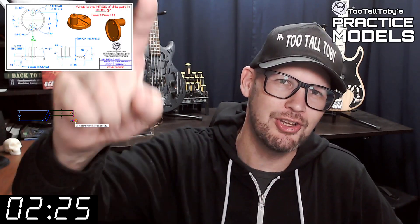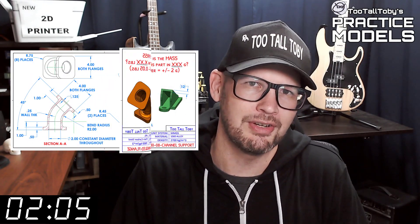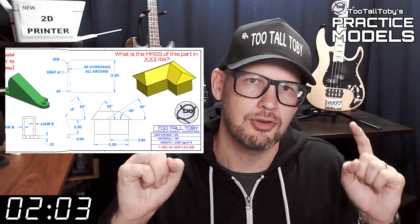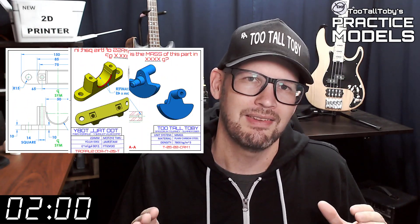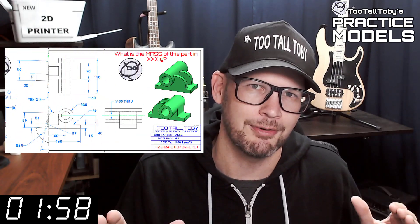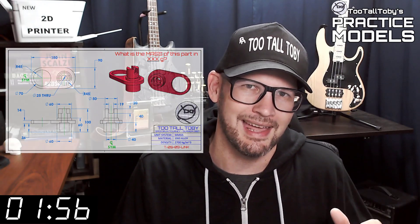Hey, what's up everybody and welcome to Two Tall Tobey's Practice Models, where we challenge you to take a 2D print and turn it into a 3D model and calculate the mass as quickly as possible. If you've been here before, go ahead and click that like button and then you can skip to the zero marker on this timer. The goal of this video series is to provide you with good quality 2D prints that have all the dimensions and information you need to create a 3D model.